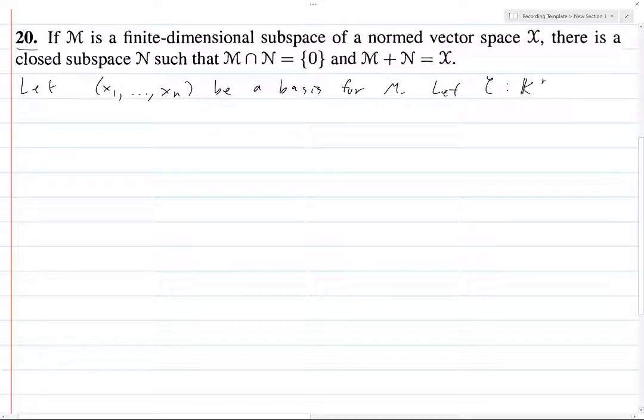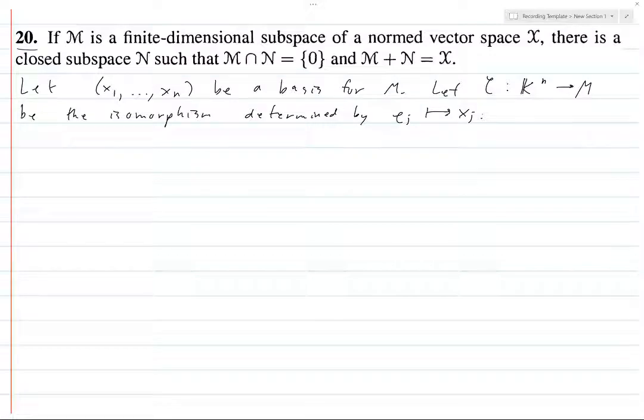So there is some map φ from Kⁿ to M. Be the isomorphism determined by, or just you send eⱼ to xⱼ and you linearize it to make it linear. So then φ is linear by construction.